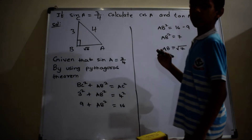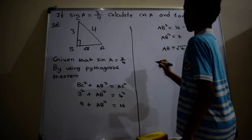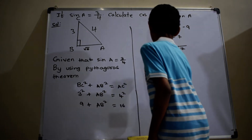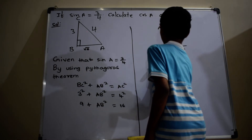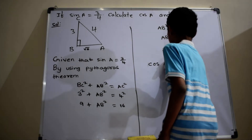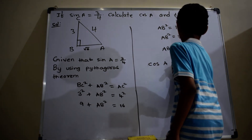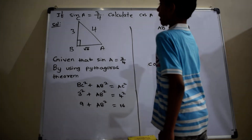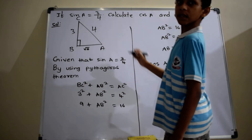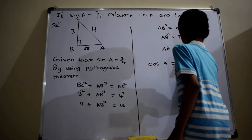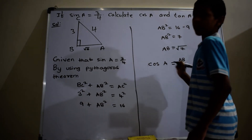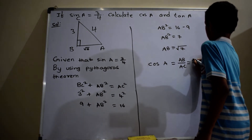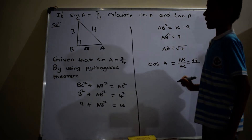In this triangle, cos A equals AB by AC, which equals square root of 7 by 4.